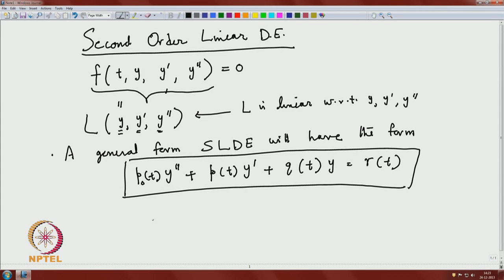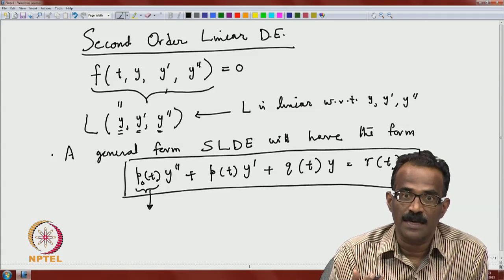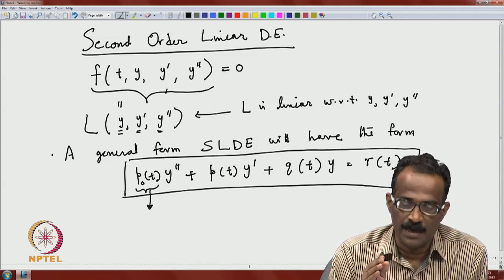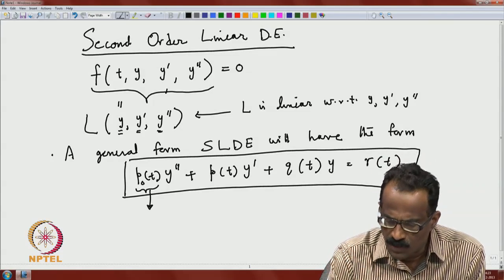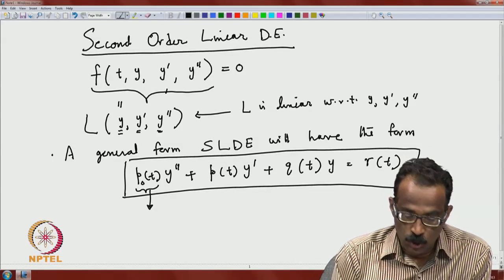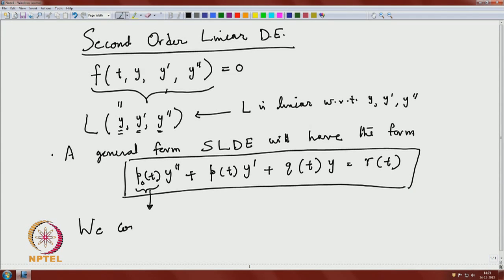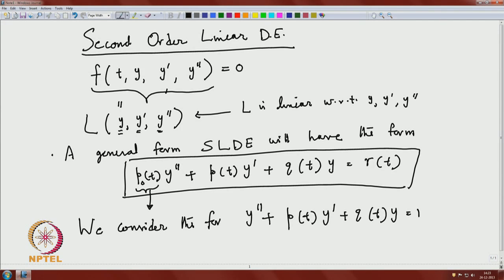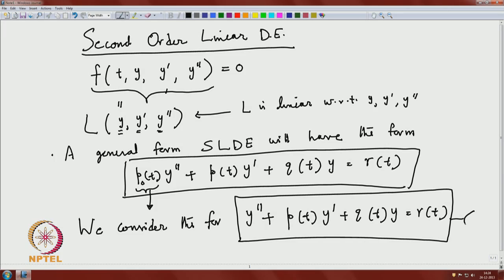As with the first order equation, whenever the coefficient of y double prime vanishes, we get singular-type differential equations — those are not in the regular category and we will not deal with them here. So the regular general form we consider is: y double prime plus p(t) y prime plus q(t) y equals r(t). This is our main equation with coefficients p, q, and r.